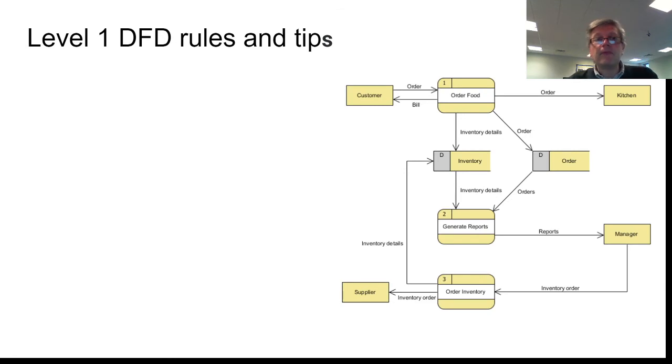There are some rules for level one data flow diagrams. You can see another example of a data flow diagram here. This one is about food orders and inventories and reports, but it looks very similar to the other one. It's using the same symbols, the same arrow showing the data flow. The arrows are labeled so we can see what the data is that's moving. The processes are listed for us again, they're numbered. The data stores are using the symbols. I've put D's in the corner to make it easier for us to understand that they're data stores.